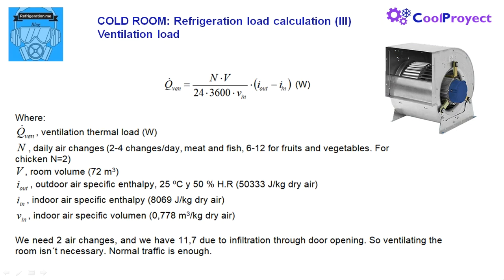The ventilation load is for some products which need air changes to remove respiration and metabolic vapors or fumes. For example, meat and fish need about 2 to 4 air changes per day. Fruits and vegetables need more, about 6 to 12. And some products like onion or garlic require more than 20 changes per day usually. It is because these products generate a lot of sulfur vapors we have to remove to keep the cold room atmosphere clean.